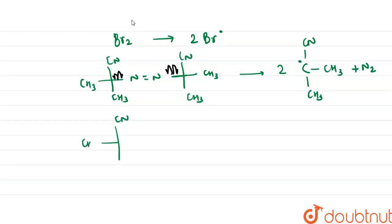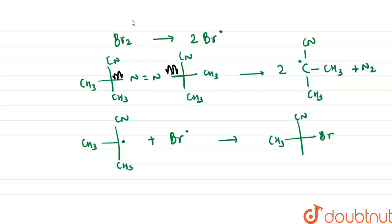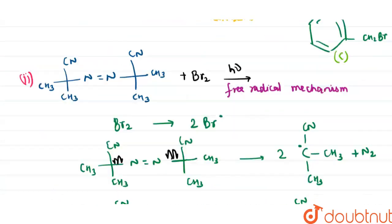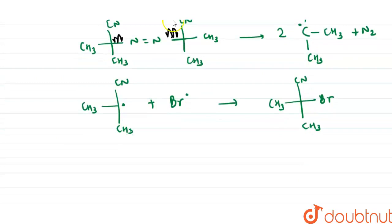The radical •C(CN)(CH₃)₂ combines with a bromine free radical to form the compound C(CN)(CH₃)₂Br. This compound is optically inactive because it does not have a chiral carbon. This is our compound D.